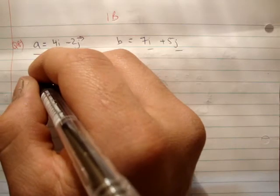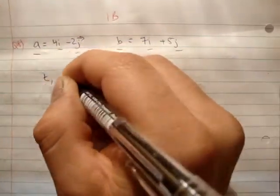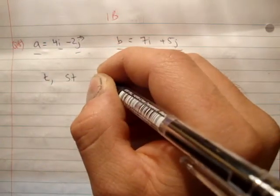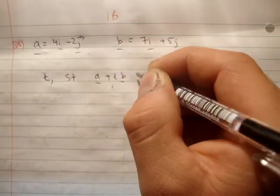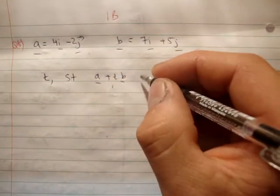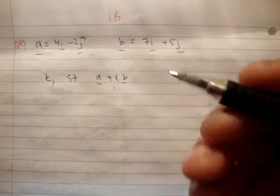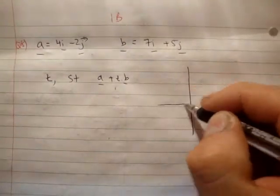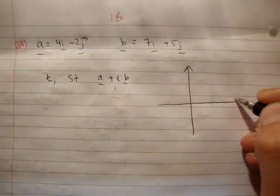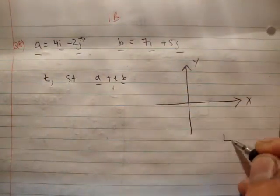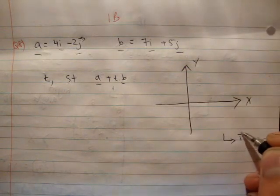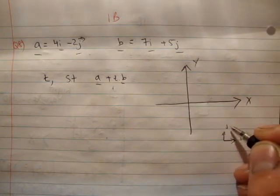And we're asked to find a scalar T such that A plus T times B is along the i-hat axis. Now, think about this. If this is your x-y plane, or your Cartesian plane, and you have your usual unit vectors, so this could be i-hat. If this is j-hat.